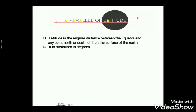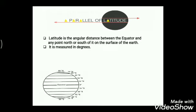Latitude is the angular distance between the equator and any point north or south of it on the surface of the earth. So it is the distance measured from the equator in either the northern or southern direction. These latitudes are measured in degrees — 0 degree, 1 degree, 2 degree, 3 degree, and so on. The angle of measurement is formed at the center of the earth.